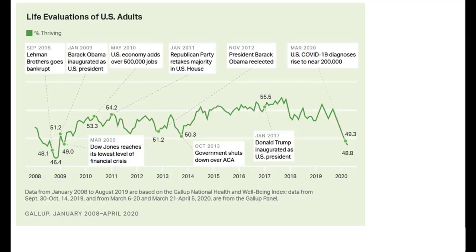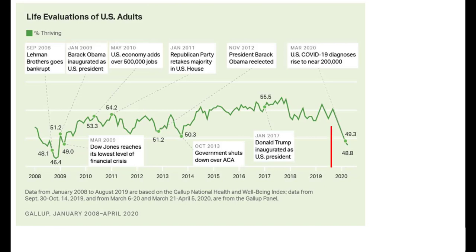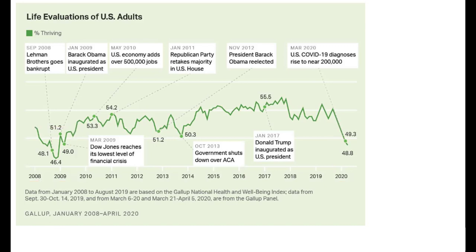According to the Gallup National Health and Wellbeing Index, the percent of US adults who identify themselves as thriving — per a scale that we'll explain later — has dropped to the same low levels that we saw during the Great Recession of 2008. For us to evaluate whether this change in well-being is useful for assessing the change over time of happiness, we need to understand how the well-being measure was constructed.